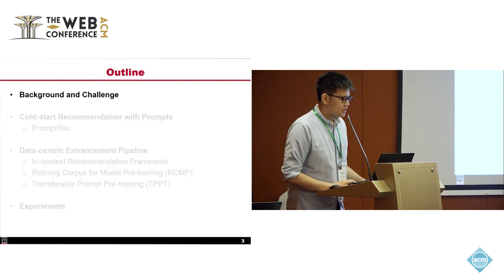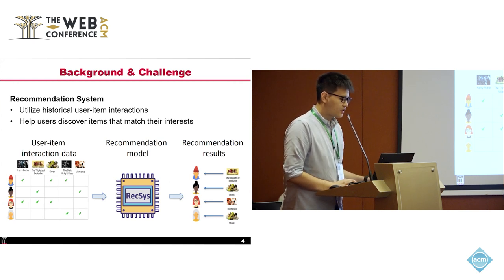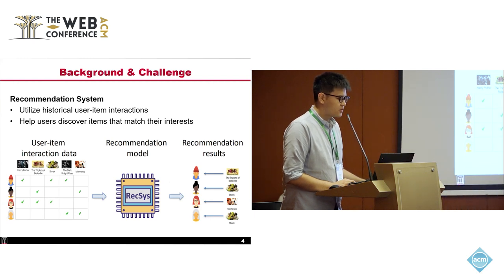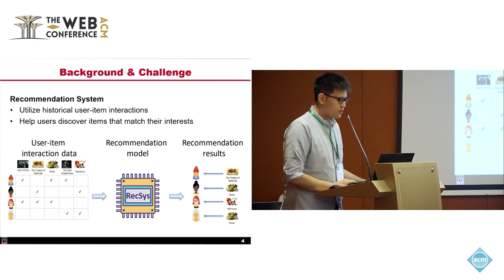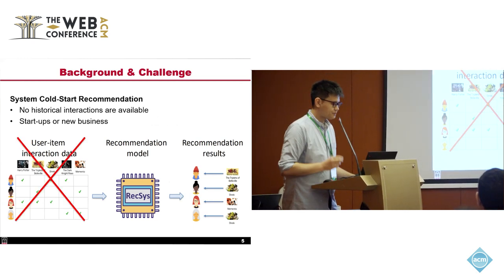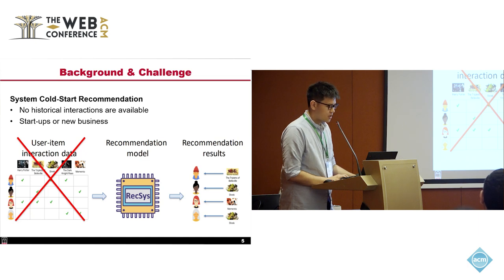Let's start with the background and challenge about this study. This is a typical pipeline of a recommendation system. The developer first collects some user-item interactions, so the user preferences could be partially observed from their interaction with some of the items. We can then train a model to learn the user preferences from the collected data. Finally, the model is used to predict the user interest on other items. However, this pipeline will break if we do not have any observed interactions — we call it the system cold-start recommendation.